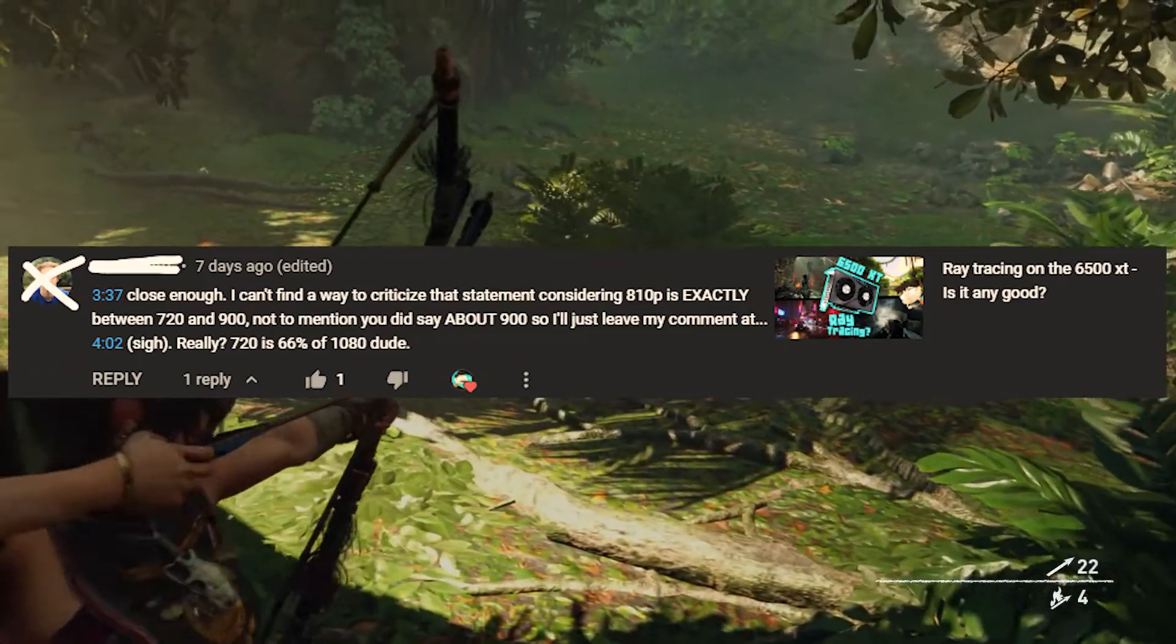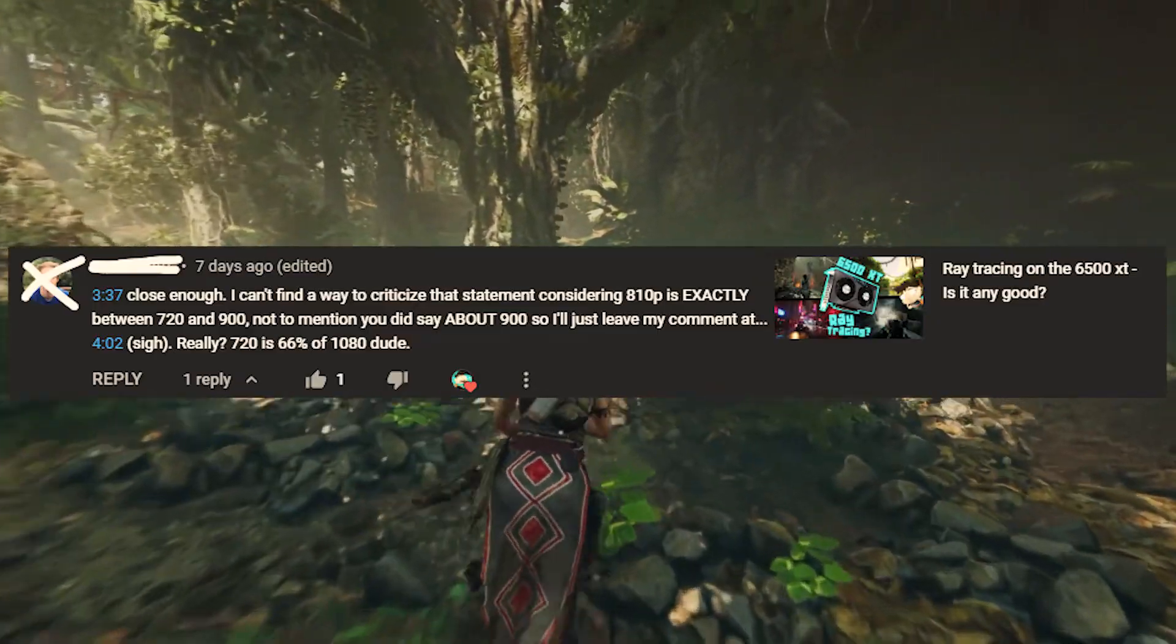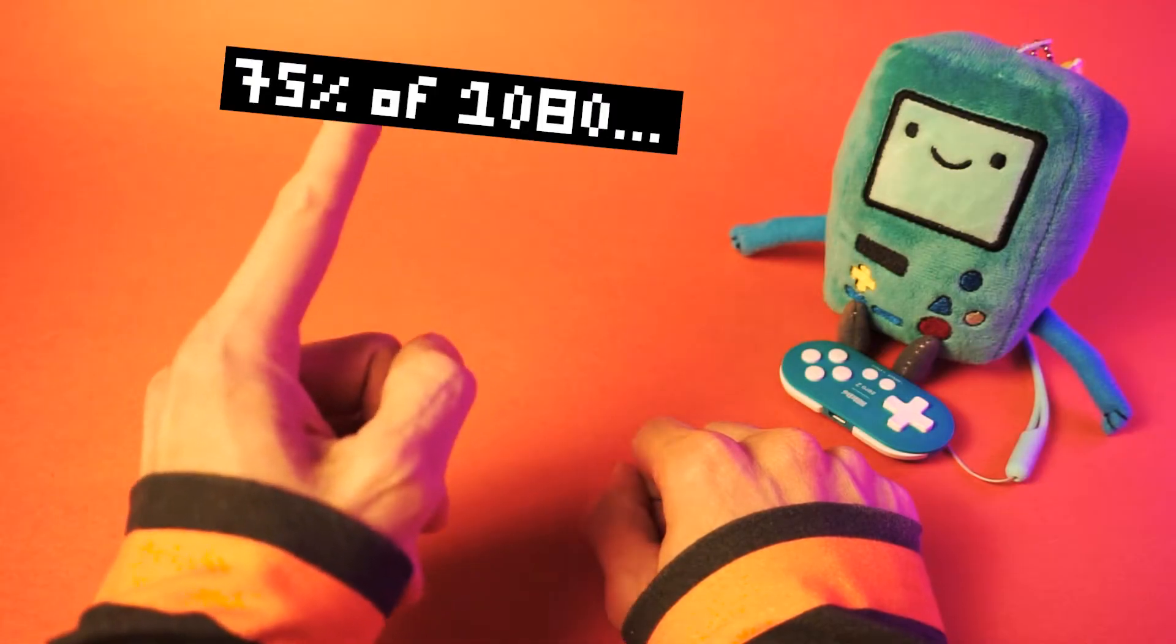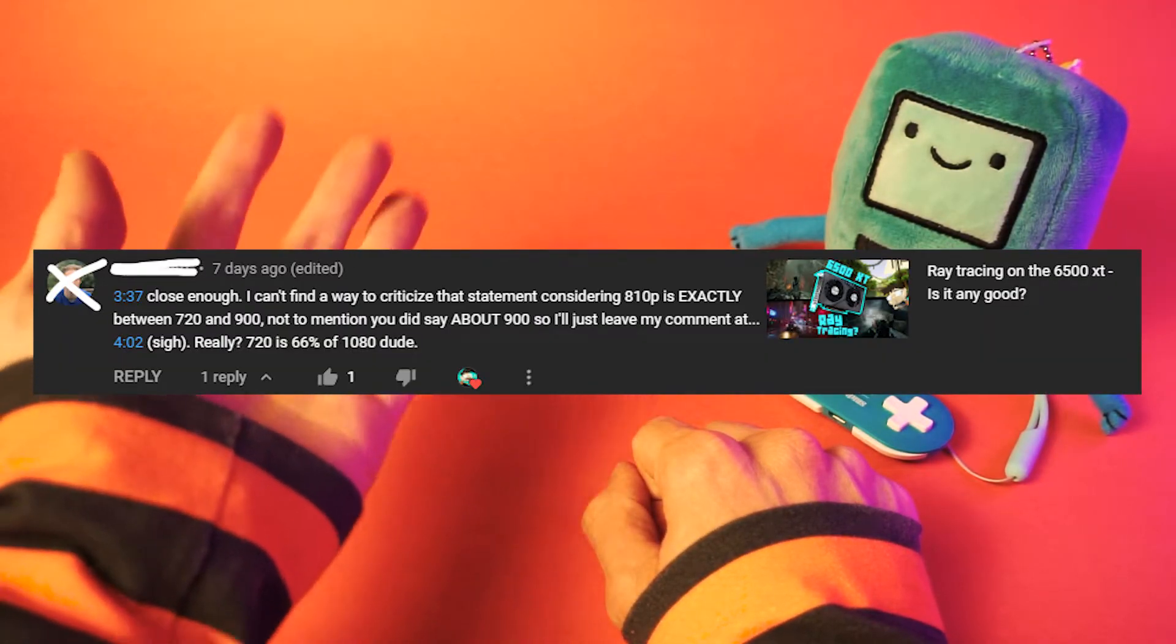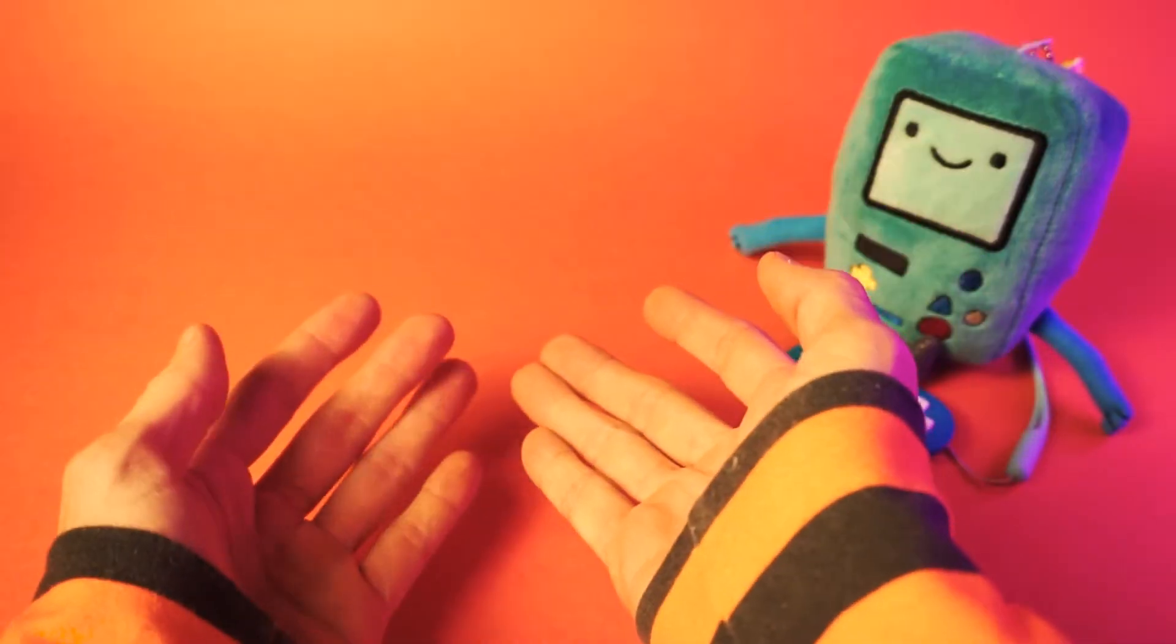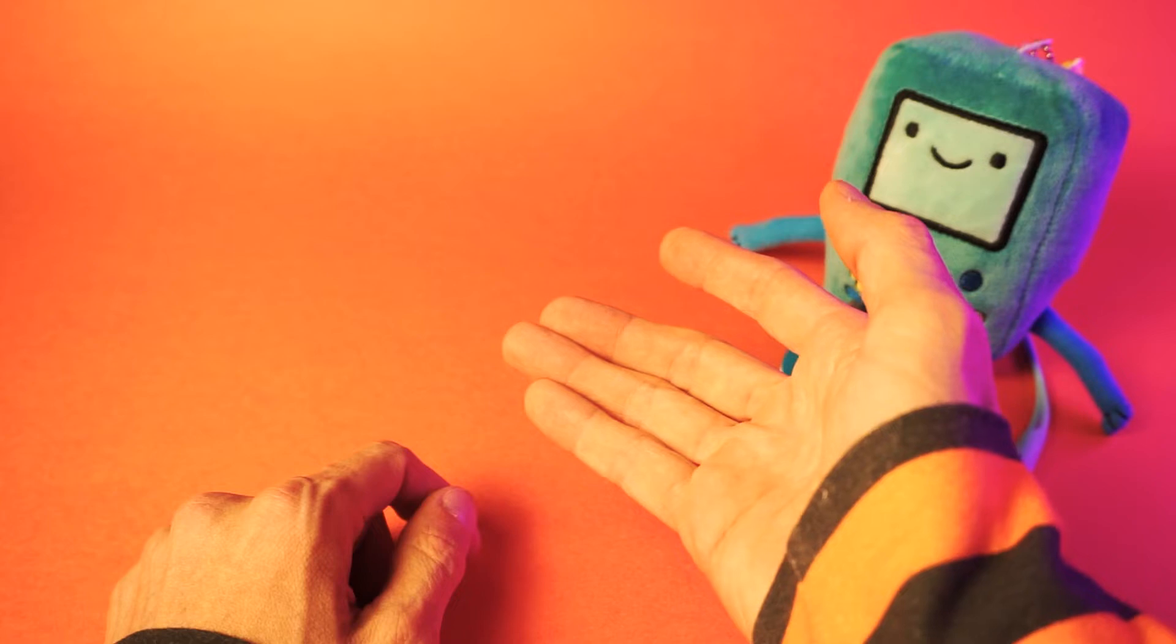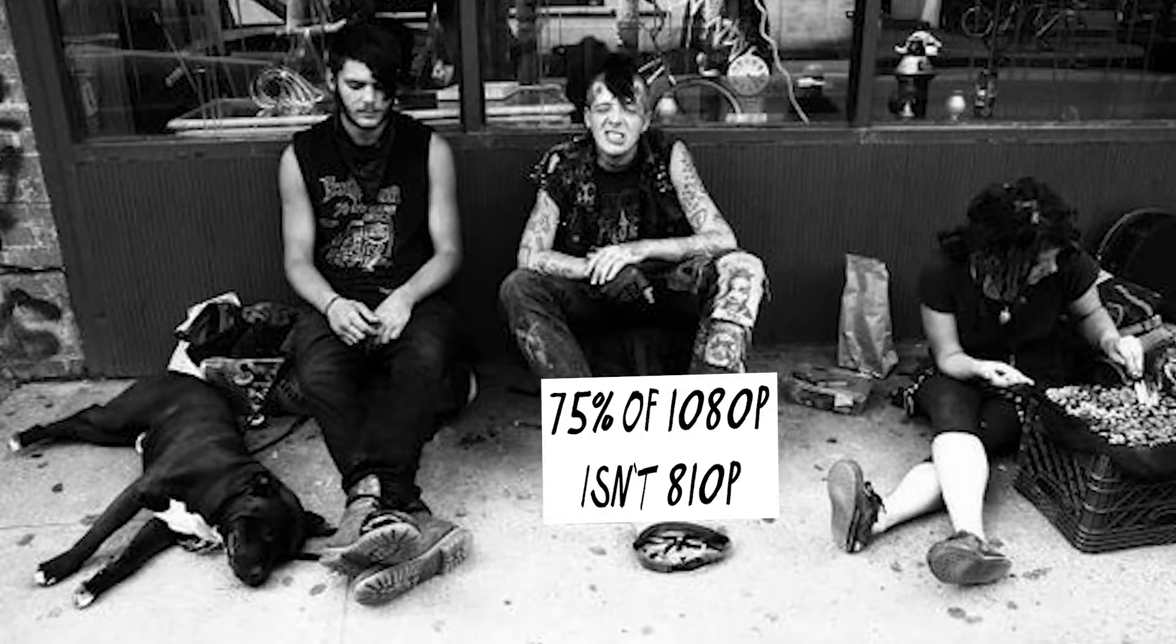The comment implied that the actual resolution I was playing at wasn't 900p, but 810p. You know, because 75% of 1080p is 810p. And I get this sort of comment quite often. People just don't understand how resolution scaling works. It's not their fault. I blame their parents. Bunch of deadbeats not teaching their kids how render scaling actually works. Not that my mom taught me. Everything I know about render scaling I learned on the streets.